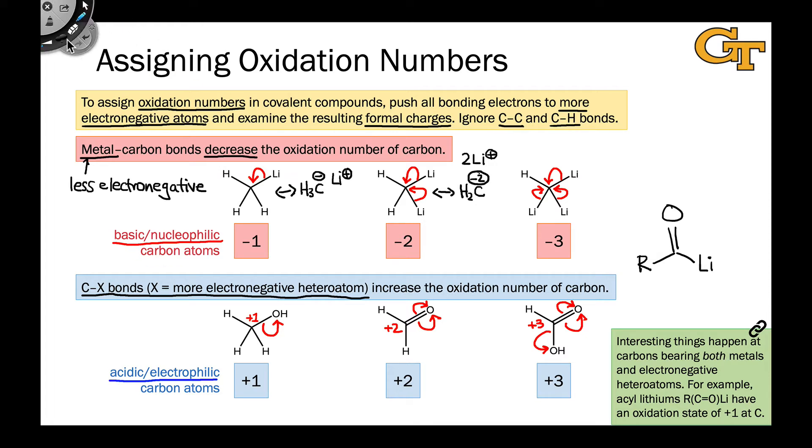Well, if we apply our electron-pushing procedure, something interesting happens. We take the electrons in the carbon-oxygen bond and push them up toward the more electronegative oxygen. But at the same time, we get a pushing of electrons from the lithium toward carbon. The carbon-lithium bond electrons head toward the more electronegative carbon atom.